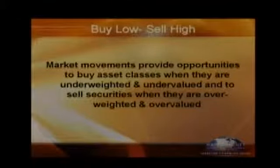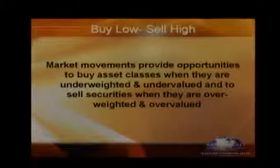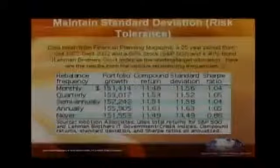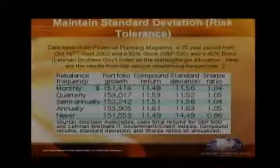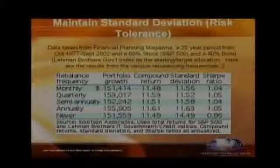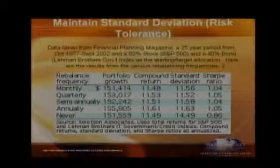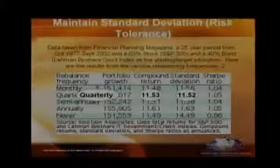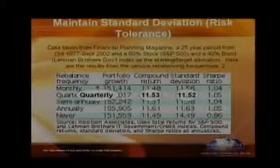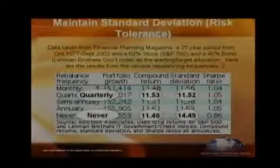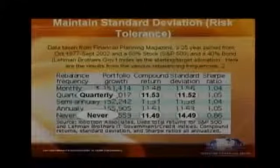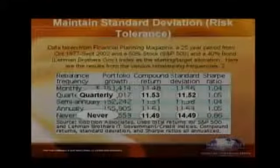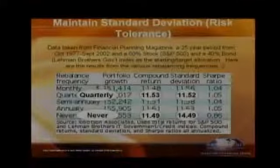When we go to buy low and sell high, market movements provide opportunities for asset classes — to buy securities when they are underweighted and to sell securities when they are overweighted. Looking at the data from 1977 to 2002 with a traditional 60-40 mix — 60% large US, 40% fixed income — with rebalancing, your return ends up being around 11.5% with a standard deviation of 11.5%. But if you never rebalanced, you still get essentially the same return of 11.4%, but your standard deviation goes up almost 3%. So not rebalancing bumps up your standard deviation, which is why we want to make sure we're consistently rebalancing.